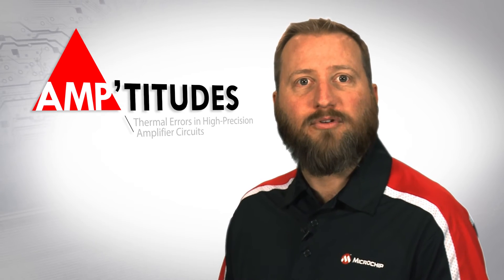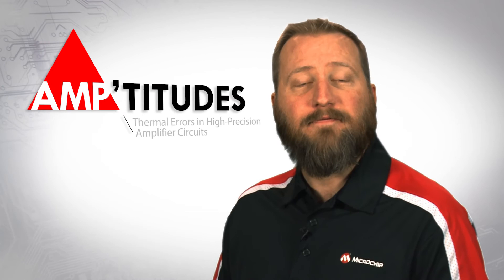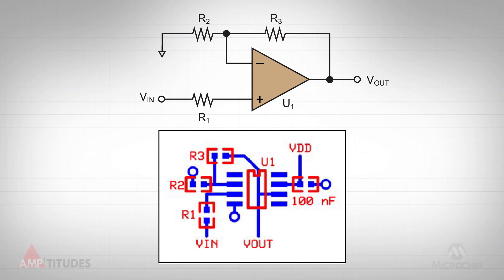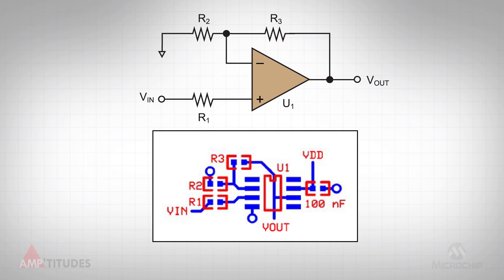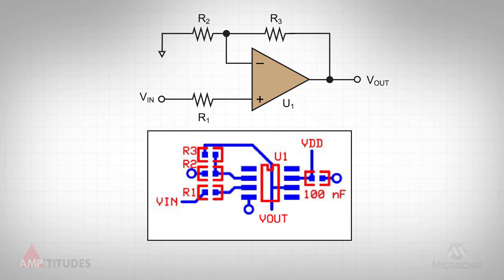Now that we understand how thermal junctions work and the errors associated with them, how can we minimize these errors? The key is to understand the effects of thermal junctions on a given circuit and proper PCB layout. Let's look at a simple non-inverting gain stage. In this example, the layout of the resistors are placed for ease of routing, but provide very poor cancellation of thermal related errors, as the accuracy will be impacted by gradients in both the x- and y-direction. This next layout example is better, as it removes any errors associated with thermal gradients in the y-direction, but is still impacted by gradients in the x-direction. In this third layout example, R3 is rotated 180 degrees and is in vertical alignment with the other two resistors, which helps to minimize the thermal junction effects in the x-direction.